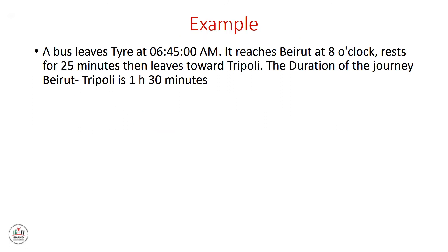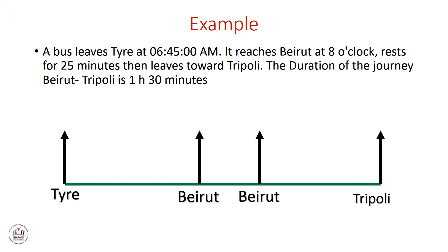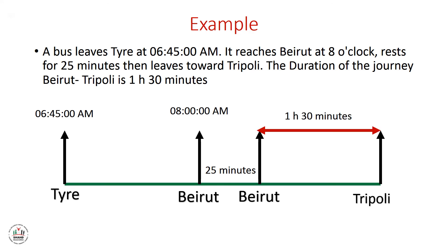Let's do the following example. A bus leaves Tyre at 6:45 a.m., reaches Beirut at 8:00 a.m., rests for 25 minutes, then leaves toward Tripoli. The duration of the Tripoli leg is 1 hour and 30 minutes. Let's draw a timeline: the first station is Tyre at 6:45 a.m., the second is Beirut at 8:00 a.m., the rest in Beirut is 25 minutes, and the journey from Beirut to Tripoli takes 1 hour 30 minutes.